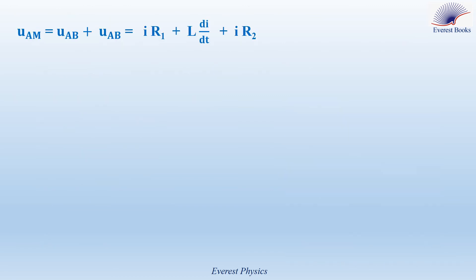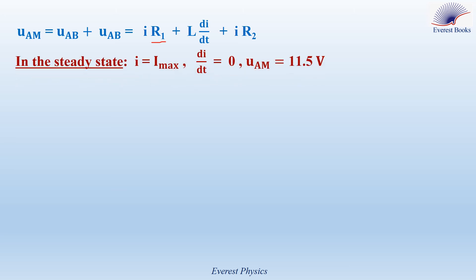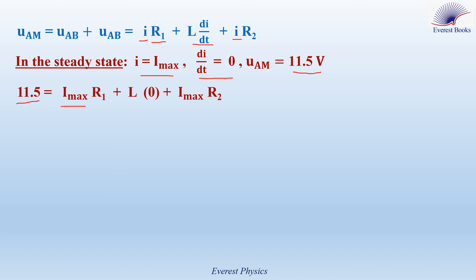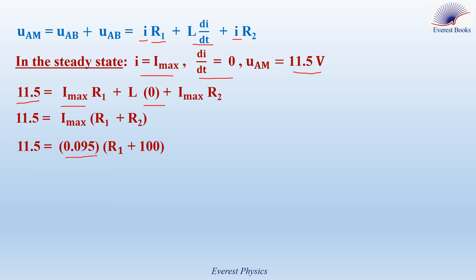Now determine R1, the internal resistance of the coil. In the steady state, I equals I max and this current is constant, so dI/dt equals 0. UAM in steady state is 11.5 volts. Replacing UAM by 11.5, I by I max, and dI/dt by 0, then taking I max as a common factor gives 11.5 equals I max times (R1 plus R2). Substituting I max equals 0.095 amperes and R2 equals 100 ohms, R1 is approximately equal to 21 ohms.